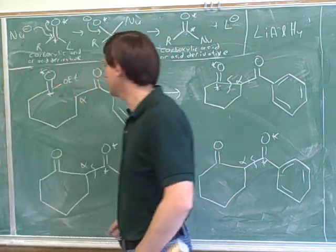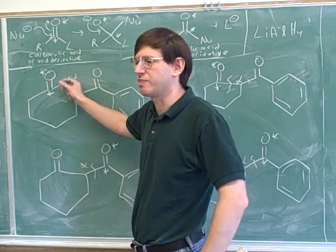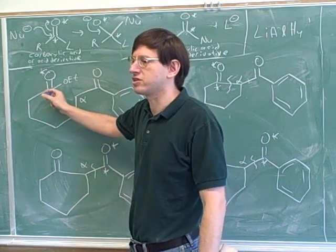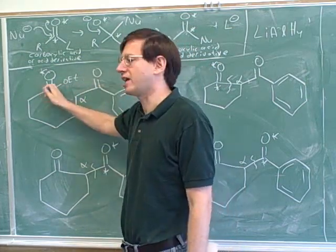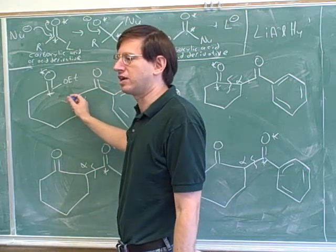OEt? Yeah, an ethoxide group. That seems reasonable. That's just how they did it in the book. Yeah, this is a common type of L group to use here. But O-methyl would work, O-propyl would work. The key thing is that we want this to be an ester, because a Claisen condensation is when you attack an ester.